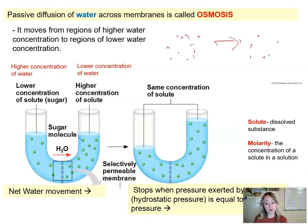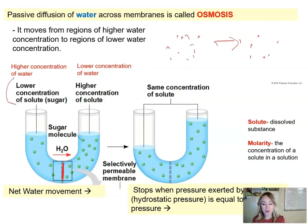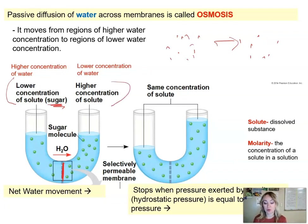We can actually observe such movement in this laboratory setup. We use this U-shaped tube, and you can see both arms of the tube are separated by a membrane. On one side of the membrane we have a lower concentration of solutes — in this case sugar — and therefore a higher concentration of water. The other arm of the tube will have a higher concentration of solute and therefore lower concentration of water.